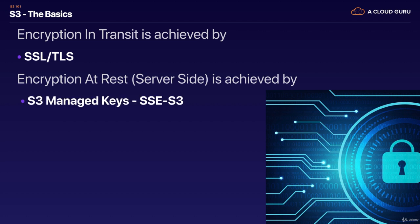On the server side, there are three different types. There's S3 managed keys, where Amazon manages the keys for you automatically, so you don't need to worry about the keys at all. A key is just a way of encrypting the object and then decrypting it, just like you would use a key with a lock. That's S3 managed keys, sometimes referred to as SSE-S3, which is server-side encryption S3.